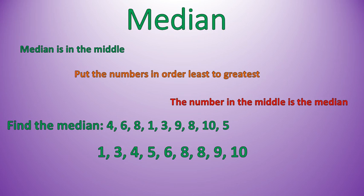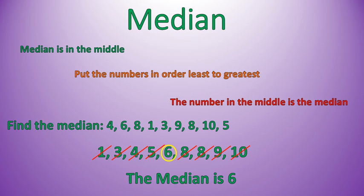Let me show you how this would work. If I was asked to find the median of this list of numbers, I would first order them from least to greatest — making sure I have the same number of numbers in both lists. Then I'll start finding my way to the middle. One strategy I like is to cross off the lowest and highest and work my way in until I find the middle. In this case, the median is 6.